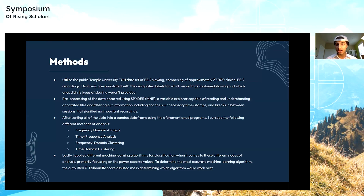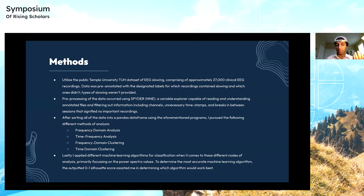To determine the most accurate machine learning algorithm, the outputted zero-to-one silhouette score assisted me in determining which algorithm would work best. The question arises: why not use an accuracy calculator? Unfortunately, given that the types of slowing were not provided, I wasn't able to use standard accuracy measures. Therefore, I used the silhouette score, which compares one cluster to another — if it's closer to one, it has the most correlation and is most accurate; if closer to zero, it is not adequate.